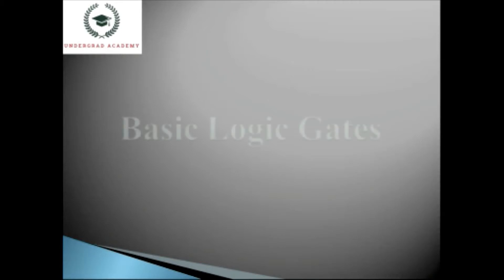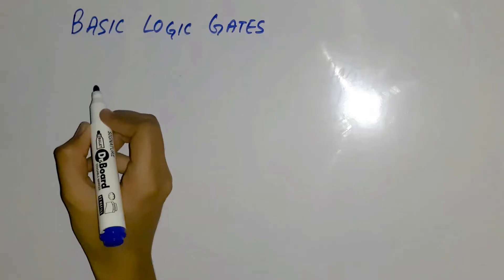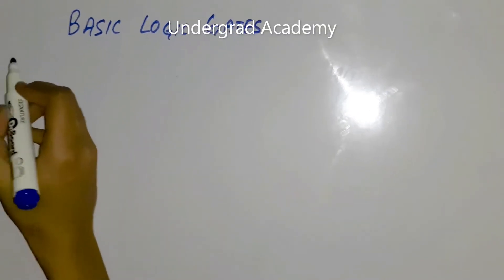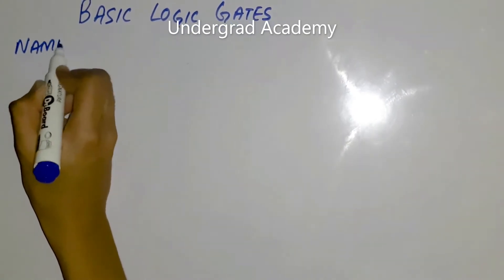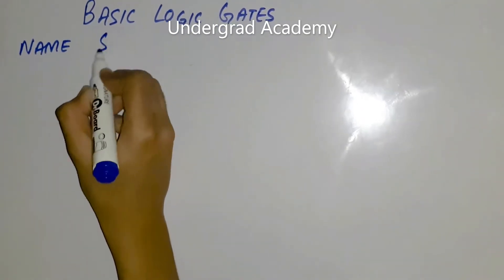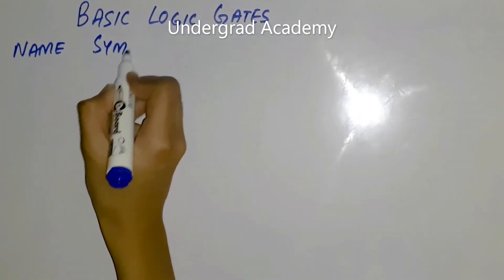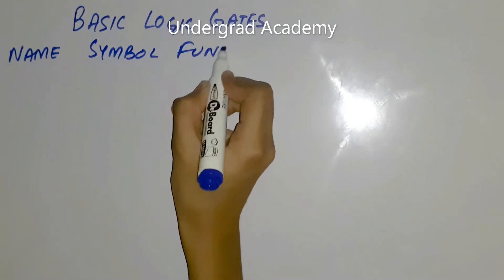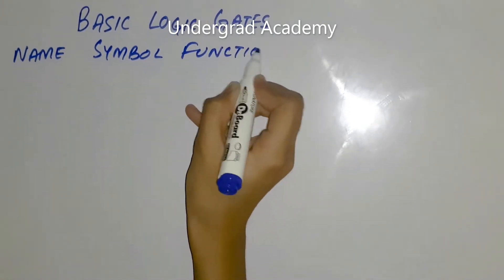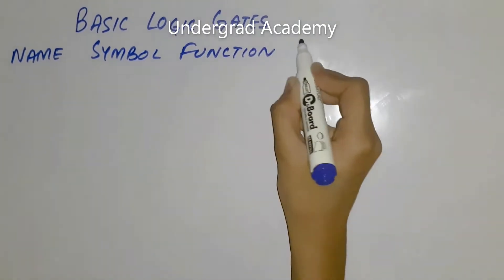Welcome to the very first lesson of Digital Logic Design. In this tutorial, we will learn about the basic logic gates. For logic gates, we first of all have the name of the logic gate, its symbol, the function, and the truth table.